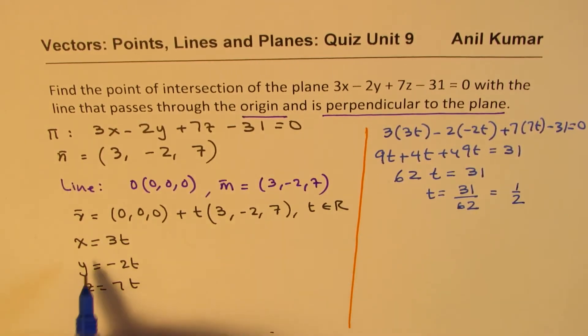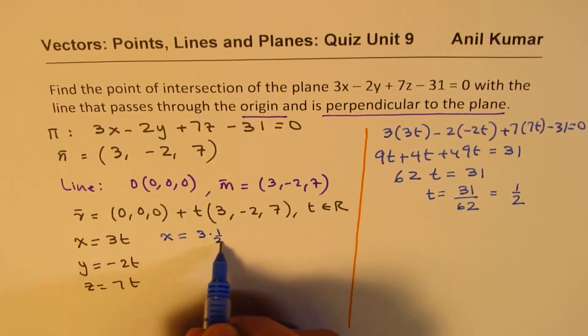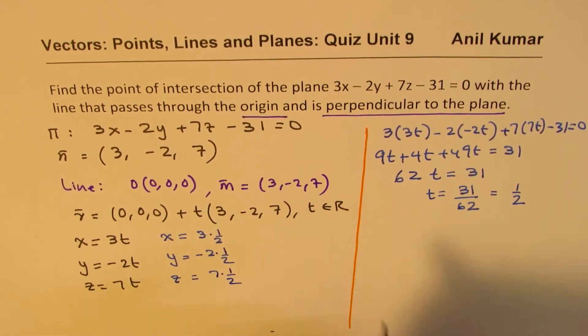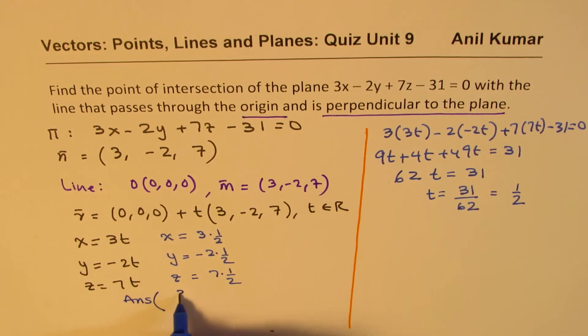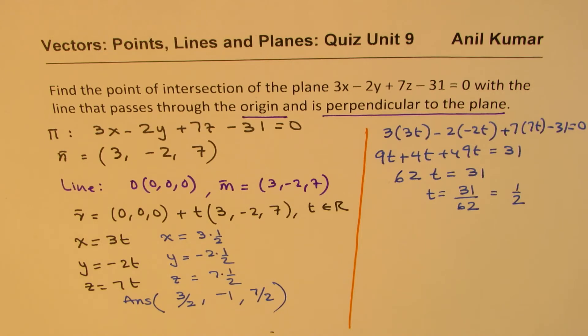Since we got the value of t as half, we can find what x is. x is 3 times half, y is minus 2 times half, and z is 7 times half. So we get our point of intersection. So our answer here is (3 over 2, minus 1, and 7 over 2). So that becomes our point of intersection of the line with the plane.